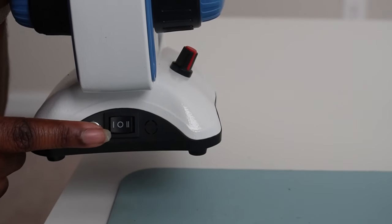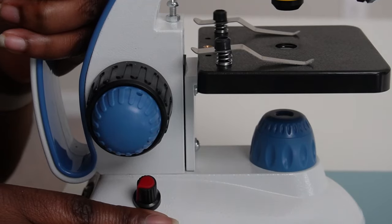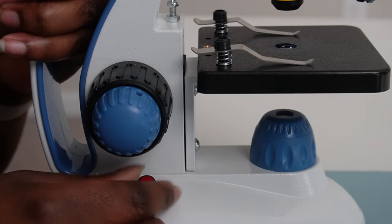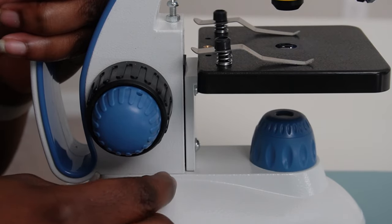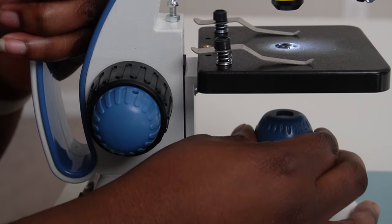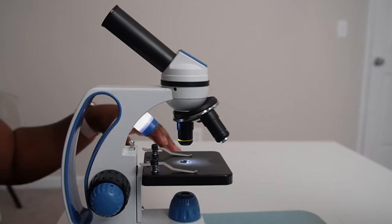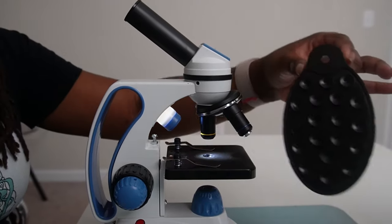There is a power switch located in the back of the microscope. Let's power it on and test it out. Okay, I think this would be the knob. Yeah, so this is the brightness adjustment. You can make it brighter or lighter.